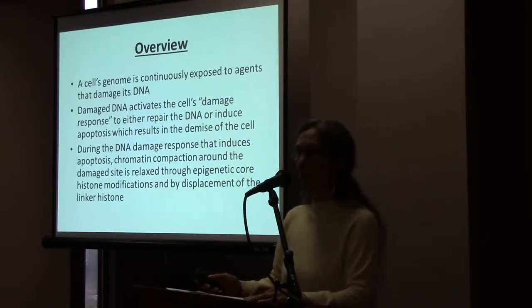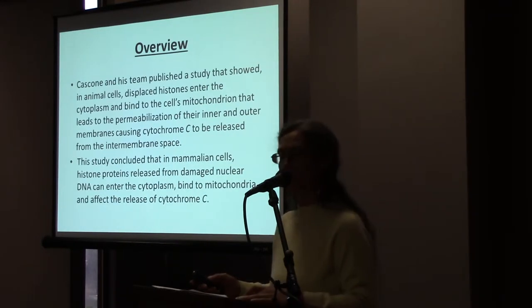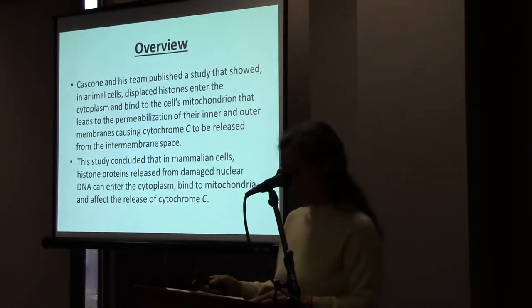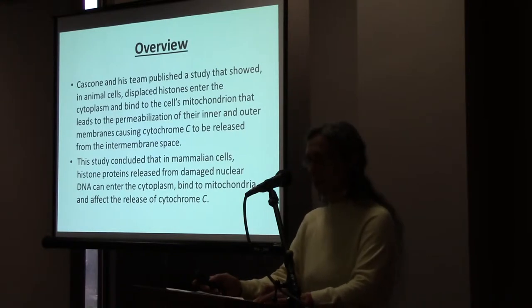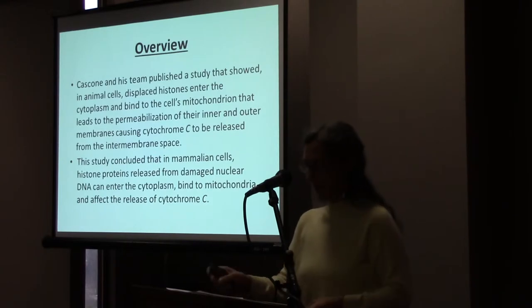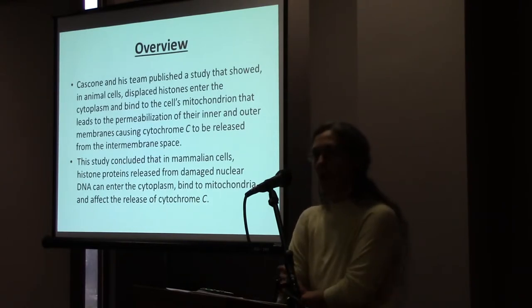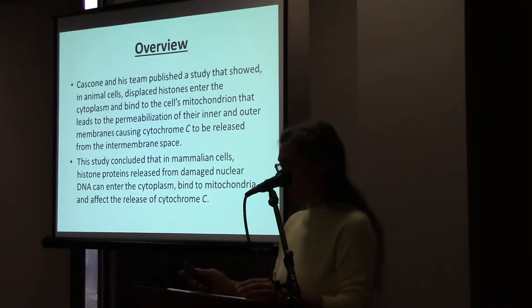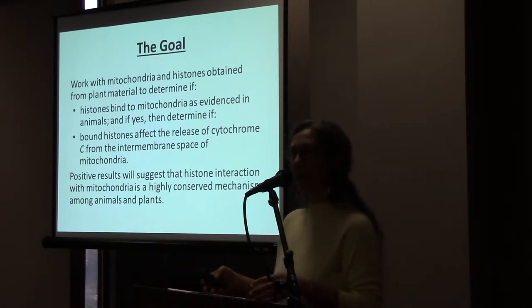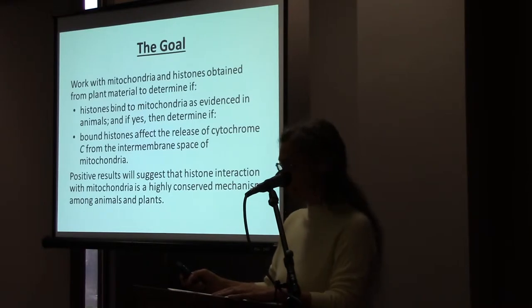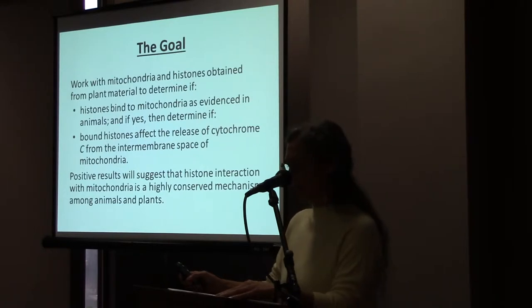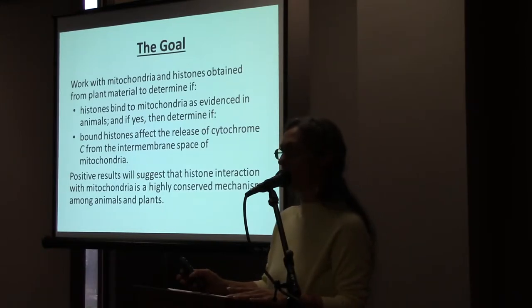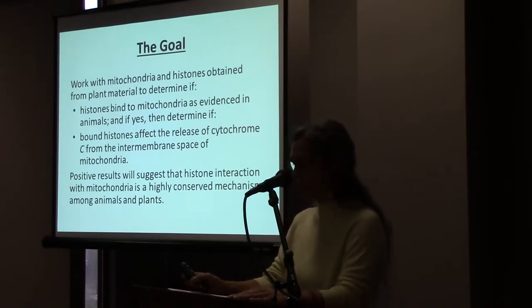At the beginning of 2012, Cascone and his team published a study showing that in animal cells, displaced histones enter the cytoplasm and bind to the cell's mitochondria, leading to permeabilization of the inner and outer membranes, causing cytochrome C to be released from the mitochondrion's intermembrane space. This study concluded that in mammalian cells, histone proteins released from damaged nuclear DNA can enter the cytoplasm, bind to mitochondria, and affect the release of cytochrome C. The goal of this project is to determine if histones similarly bind to plant mitochondria and affect the release of cytochrome C from the intermembrane space.